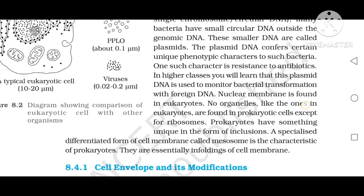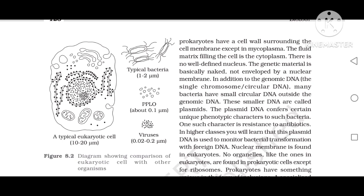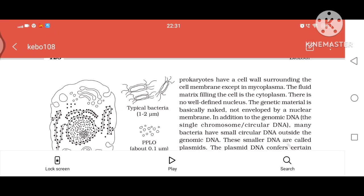Figure 8.2 shows a comparison of eukaryotic cells with other organisms: a typical eukaryotic cell is 10 to 20 micrometers; typical bacteria are 1 to 2 micrometers; PPLO about 0.1 micrometers; and viruses 0.02 to 0.2 micrometers.